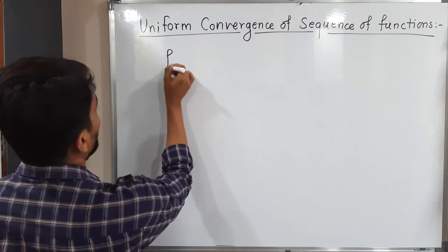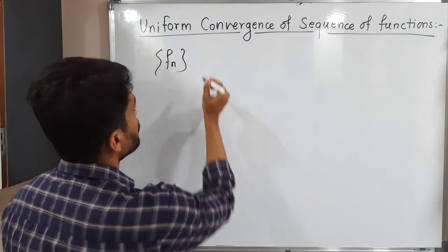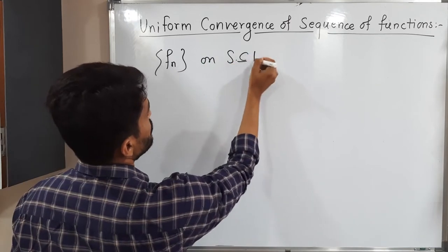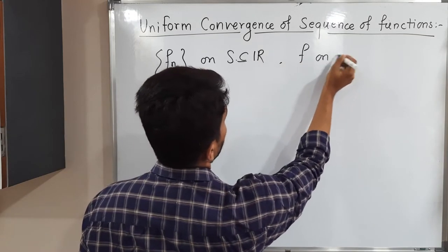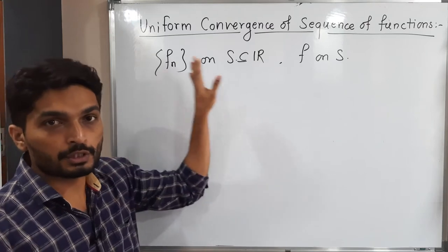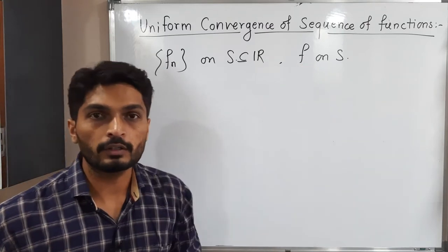Suppose we have fn be a sequence of functions. All those functions are defined on S which is a subset of R, and we have a function f which is defined on S. So we have a sequence of functions which are defined on S and we have a function f also which is defined on S.